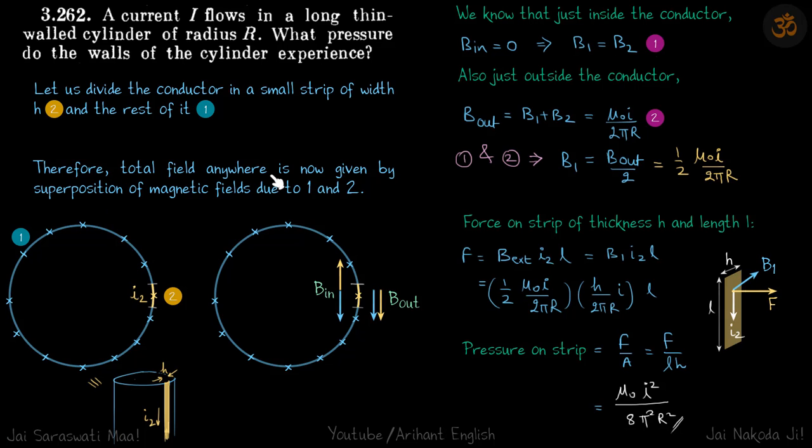Therefore, total field anywhere is now given by superposition of magnetic fields due to one and two. Individually, the magnetic fields produced by this blue area we can add to the magnetic field produced by the yellow area to get the total field.